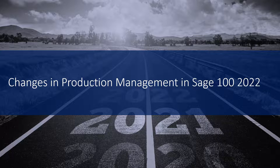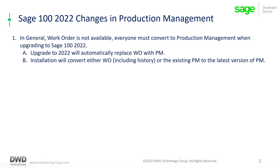Most of the changes that Sage did in 2022 were for production management. Work order is no longer available in 2022 — everyone must convert to production management when upgrading to Sage 2022. During the upgrade process, it will automatically replace work order with production management and convert either your work order data or your existing production management data to the latest version.